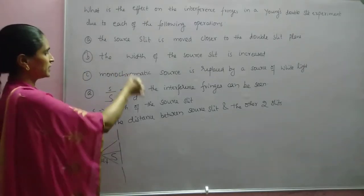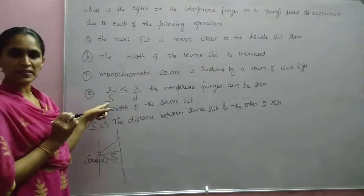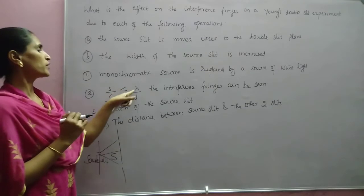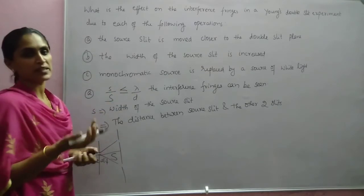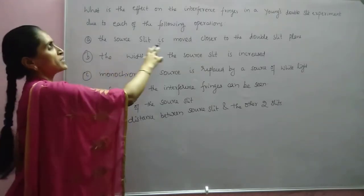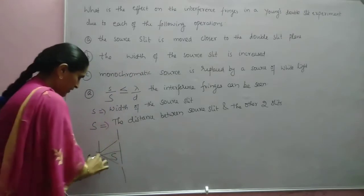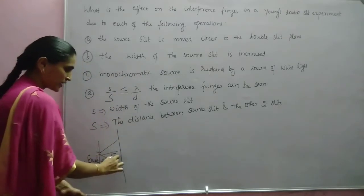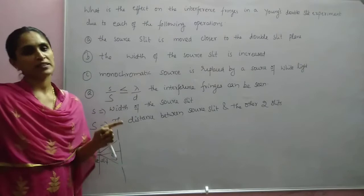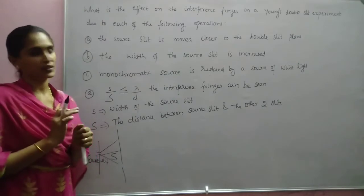If the sole slit is moved closer to the double slit plane, capital S decreases. When S decreases, the condition s/S ≤ lambda/d may not be satisfied. If that condition is satisfied, interference fringes will be seen; otherwise, interference fringes will not be seen. If it becomes very much closer, interference fringes will vanish.